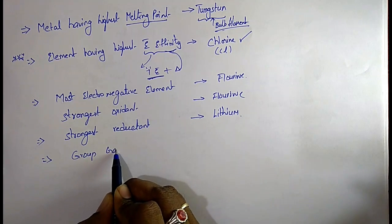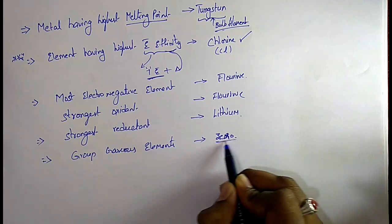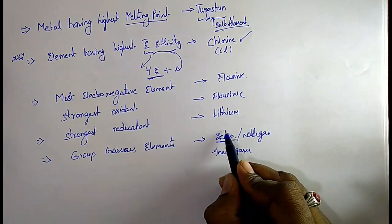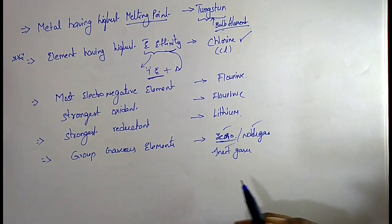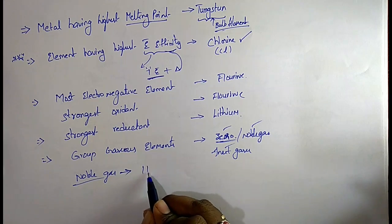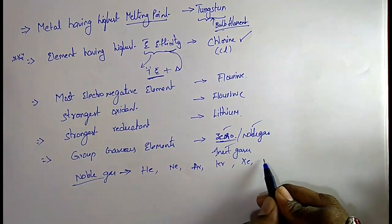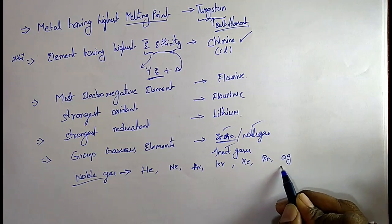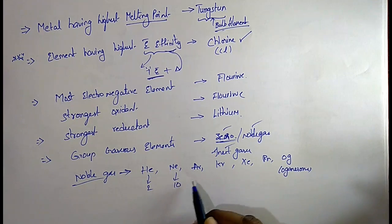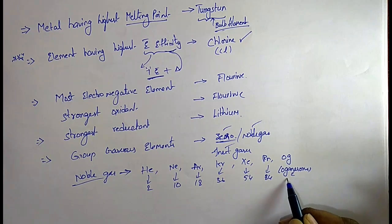The group of gaseous elements is the 0th group, and these elements are also called noble gases or inert gases. These noble gases are not active. The noble gases are: helium, neon, argon, krypton, xenon, radon, and oganesson. Their atomic numbers are: helium-2, neon-10, argon-18, krypton-36, xenon-54, radon-86, and oganesson-118.